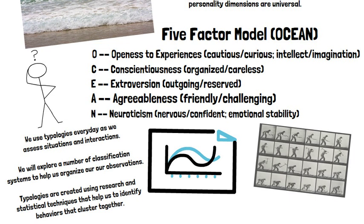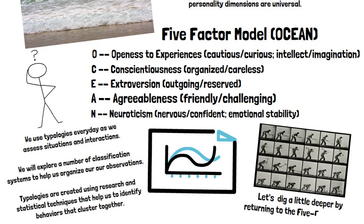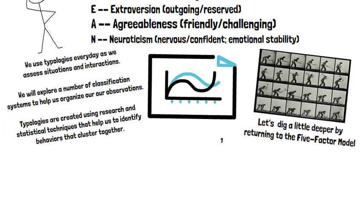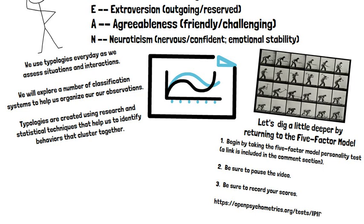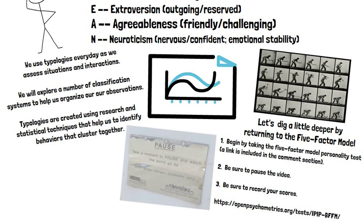Let's get a little bit deeper so we truly understand what we're talking about when we look at typologies, especially behavioral and societal typologies. Let's take a look at that five-factor model or the OCEAN model. I want you to begin by taking the five-factor model personality test. I've included a link in the comment section, and it's also listed here in this video if the link doesn't work. Be sure to record your scores and pause the video while you're working on this. It will probably take you about 10 minutes — there are 50 questions.